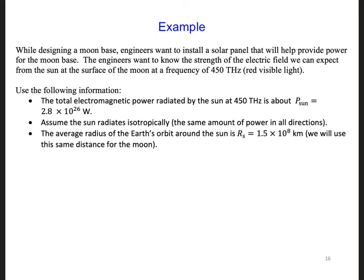First, we need to find the power density of the sunlight at the moon's surface at 450 terahertz. Assuming the sun radiates isotropically means that the radiated power spreads out equally in all directions. It spreads out over the surface area of a sphere expanding outward from the center where the sun is.